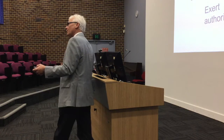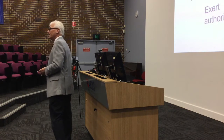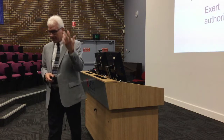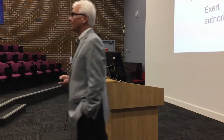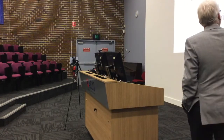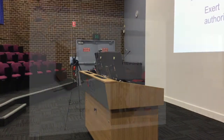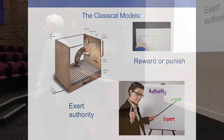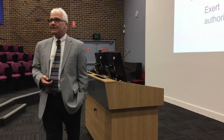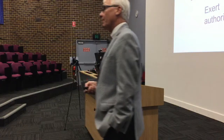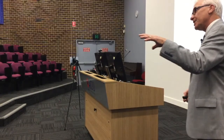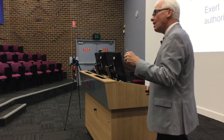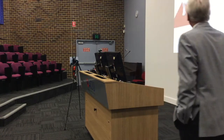Another motivational theory that is both a lay theory and a prominent method is authority — we expect people will be motivated when those in higher authority tell them what to do. This relates to the Skinnerian idea: obey authorities and get rewarded; disobey and get punished. These ideas — that motivation comes from external control through incentivization or authority — are dominant ways people think about moving others into action.